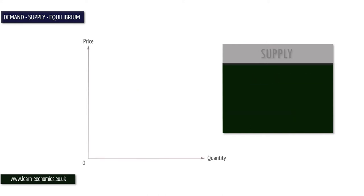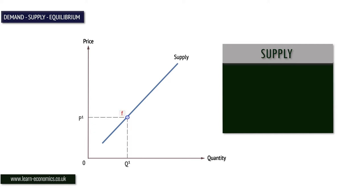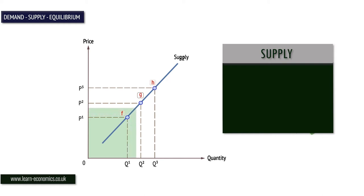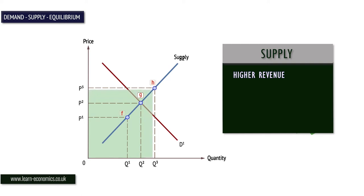Supply curves typically slope up from left to right. Price and the quantity supplied are positively related. At higher prices, producers will supply more. Why do they do this? There are several answers. Higher prices encourage output because there is an expectation of higher revenue, which is price times quantity, and higher profit.